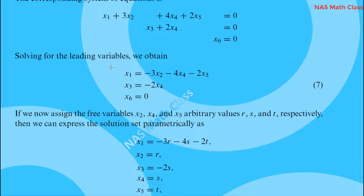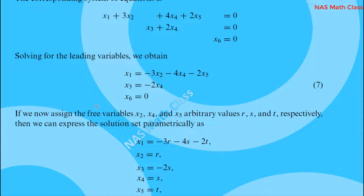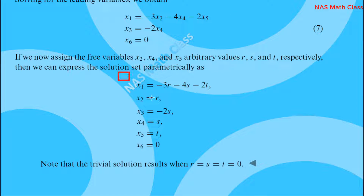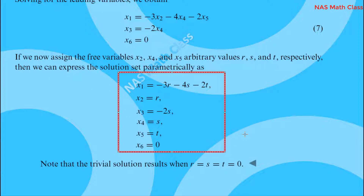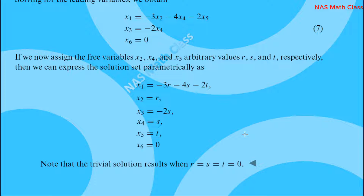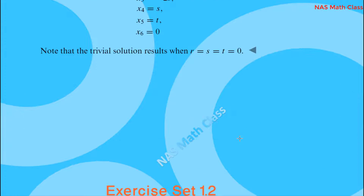The free (non-leading) variables are x2, x4, and x5. Using the Gauss-Jordan elimination process, we will start with the last column and then work through the next columns.